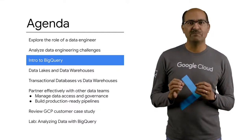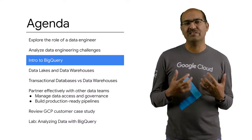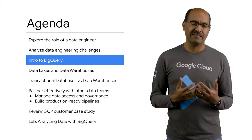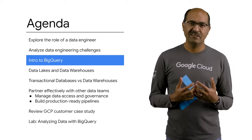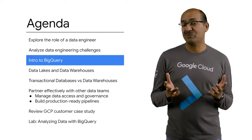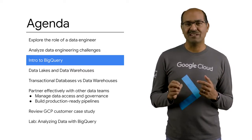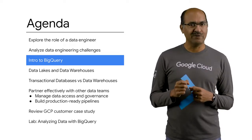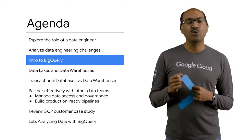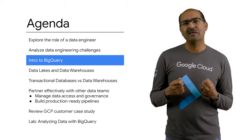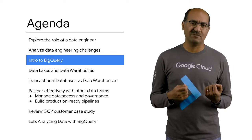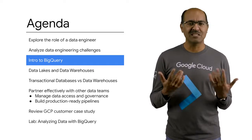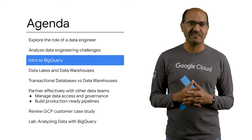There is a better way to manage server overhead so that we can focus on insights. And that better way is to use a serverless data warehouse. BigQuery is Google Cloud's petabyte scale serverless data warehouse. You don't have to manage clusters — just focus on insights.